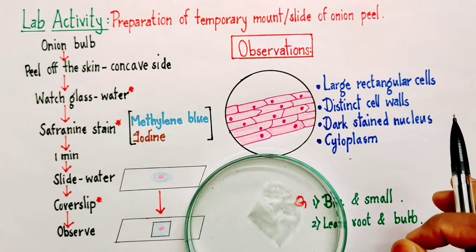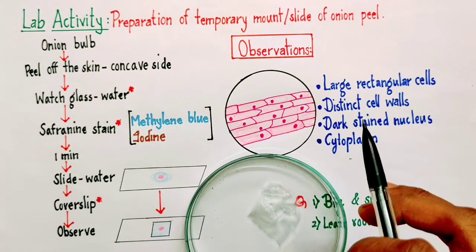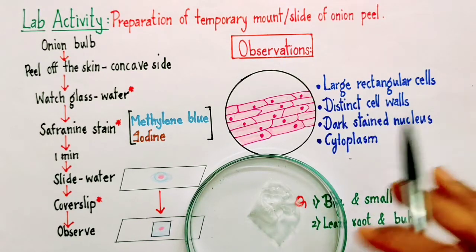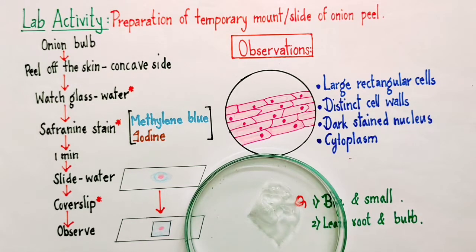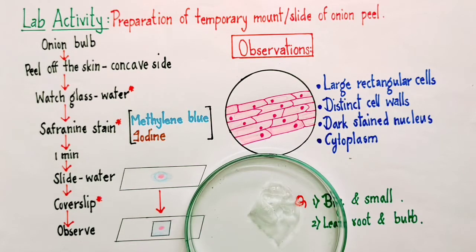The cell wall and the cytoplasm and nucleus, all these three things have different chemical composition. So depending upon their chemical composition, they are going to take more stain or less stain. We are going to see the cells in the grades of color.